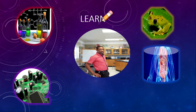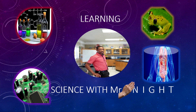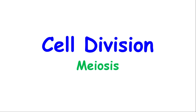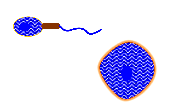Welcome back to another learning series with Mr. Knight. Today we're going to continue with cell division. However, we're going to look at meiosis. Meiosis is important for sexual reproduction — we produce our gametes, or sex cells, by this process.